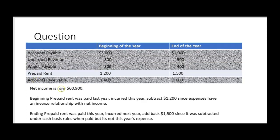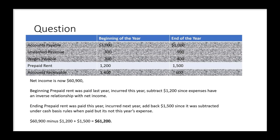Carrying the $60,900 forward to handle our last item: prepaid rent. Prepaid expenses are current assets. Beginning prepaid rent of $1,200 was paid last year with the expense incurred this year — since that $1,200 expired during the year, we increase the expense and subtract $1,200 from net income because expenses have an inverse relationship with net income. Ending prepaid rent of $1,500 was paid this year but it's next year's expense — add back $1,500 because it was subtracted under cash basis rules when paid, but it's not this year's expense. That gives us $61,200 for accrual basis net income.